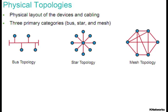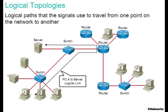A physical topology describes the layout for wiring to physical devices. There are three primary categories of physical topologies: bus, star, and mesh topology. A logical topology describes how information flows through a network.